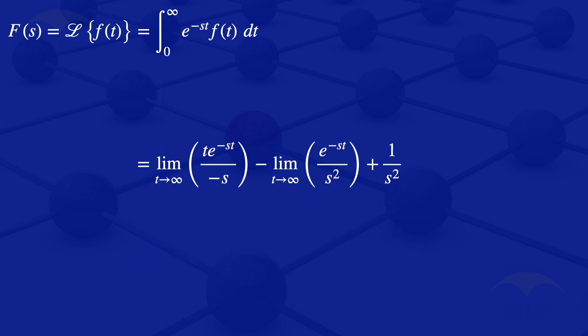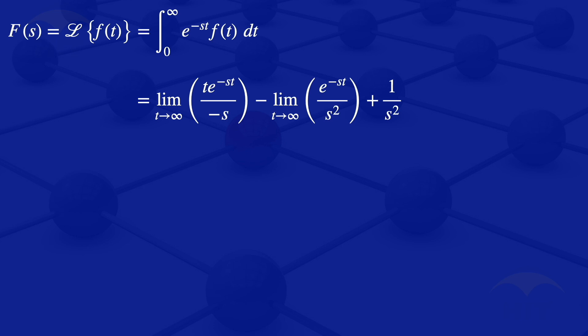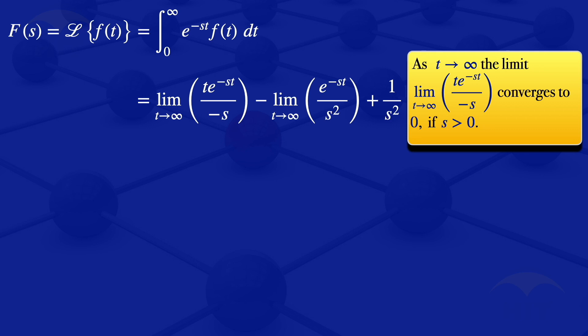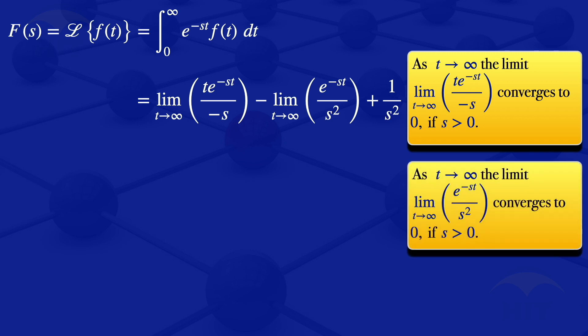We now simplify this expression. The first limit, as t approaches infinity, converges to 0 if s > 0, since t > 0. The second limit, the limit of e^(-st) / s² as t approaches infinity, also converges to 0 if s > 0. With both limits equal to 0, we are left with 1/s². So the Laplace transform of t is 1/s², valid for s > 0.